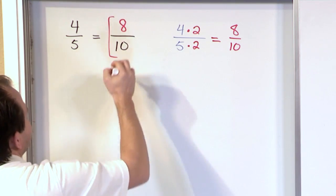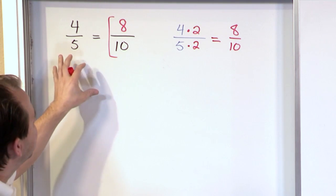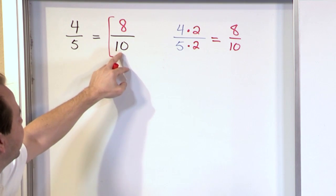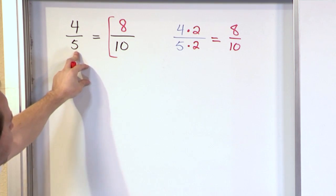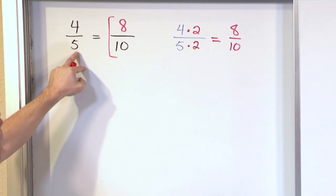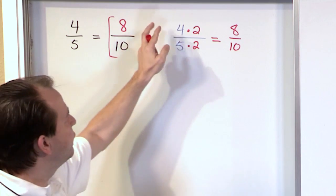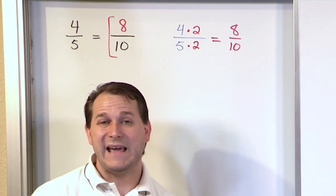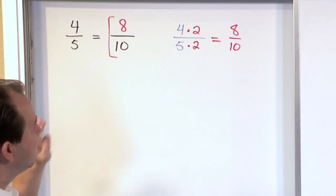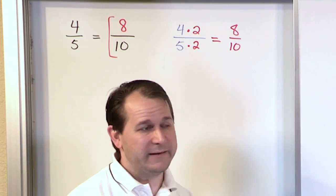This is what you would circle on your test. You're given a situation where you're trying to figure out if these fractions are equal and the bottom number is 10. What do I need to multiply by to give me 10? I figure out that I have to multiply by 2. But if I multiply by 2 on the bottom, I have to also do it on the top, so it'll be 8 tenths. If you look at 8 tenths of a pizza and 4 fifths of a pizza, it represents the same amount of pizza — that's basically the bottom line.